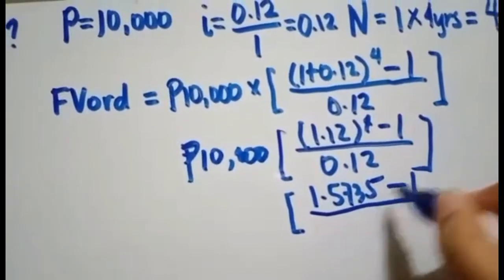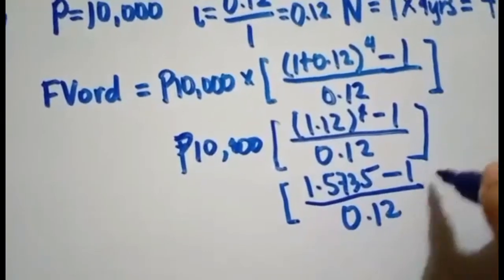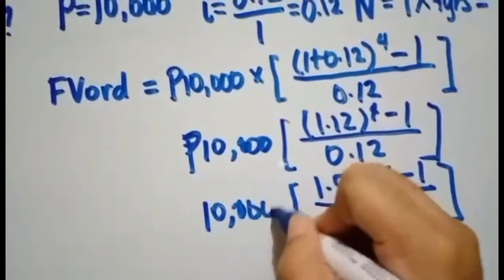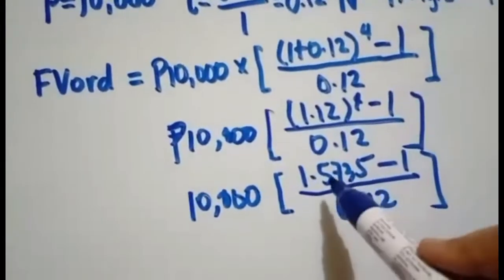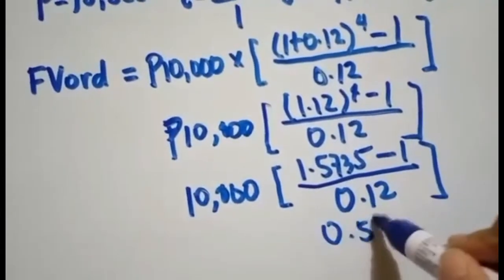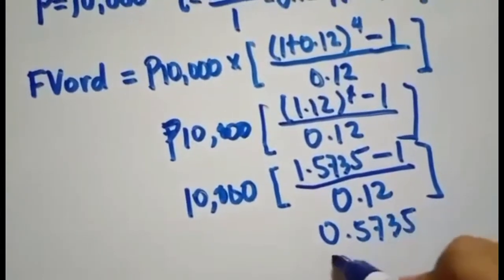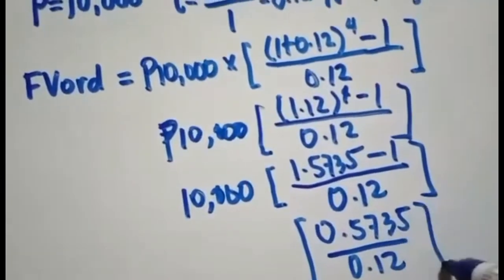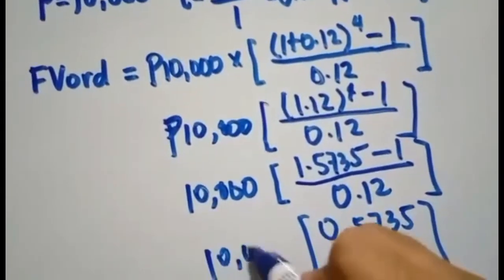Again, minus 1, and divide by 0.12. Then, you have your 10,000 pesos annuity payment. You have to resolve this thing. You have 0.5735 by 0.12 and the 10,000 pesos annuity payment.